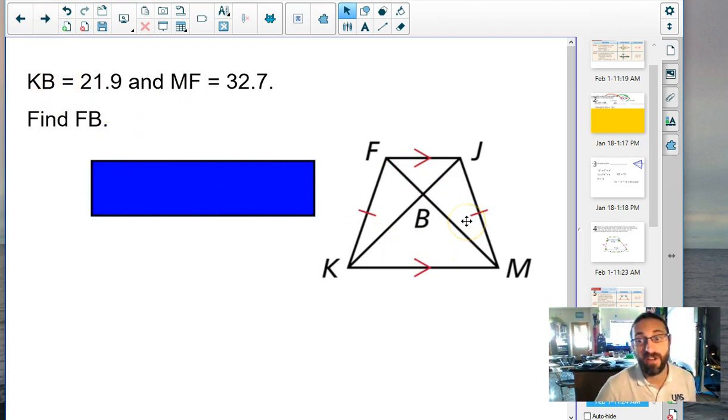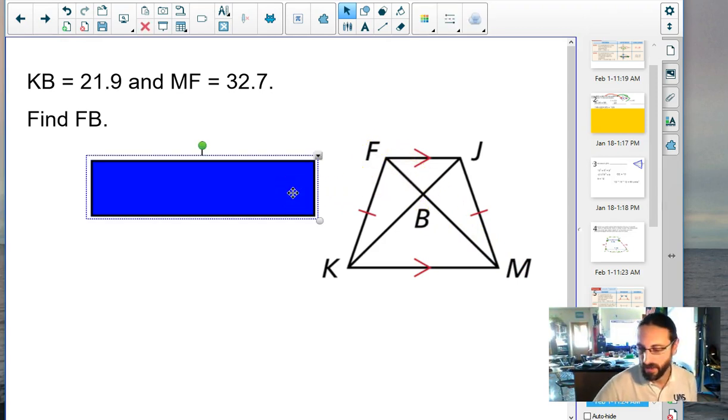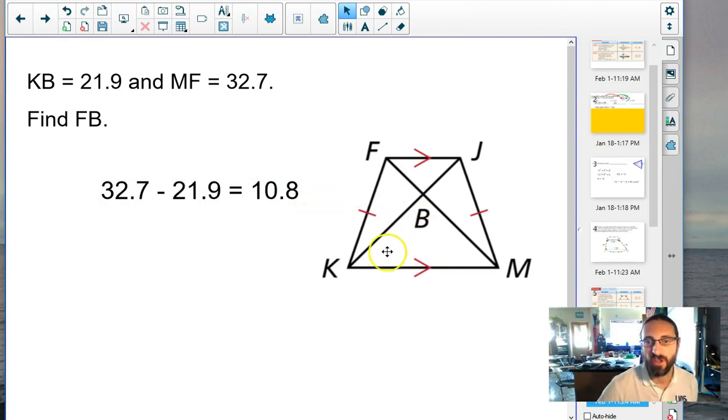All right, so here for an example, I definitely have an isosceles trapezoid because those are parallel and the legs are the same. That means I know my diagonals are congruent. They don't have to be perpendicular, so don't take that assumption. But it says if KB, or from here to here, is 21.9 and MF is 32.7, find FB. Oh, find this little leg right here. Easy peasy. I'm just going to subtract this longer piece from the entire diagonal.